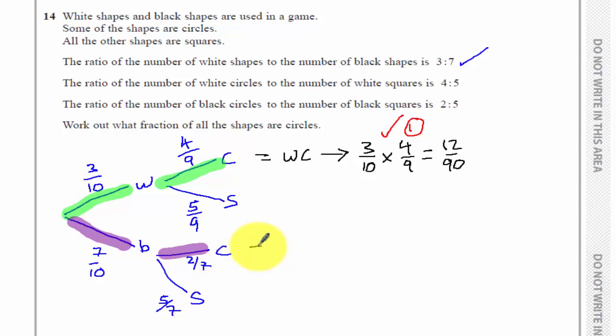To get a black circle, I'd have to work out seven tenths times two sevenths, which is 14 over 70. And there's my second mark.